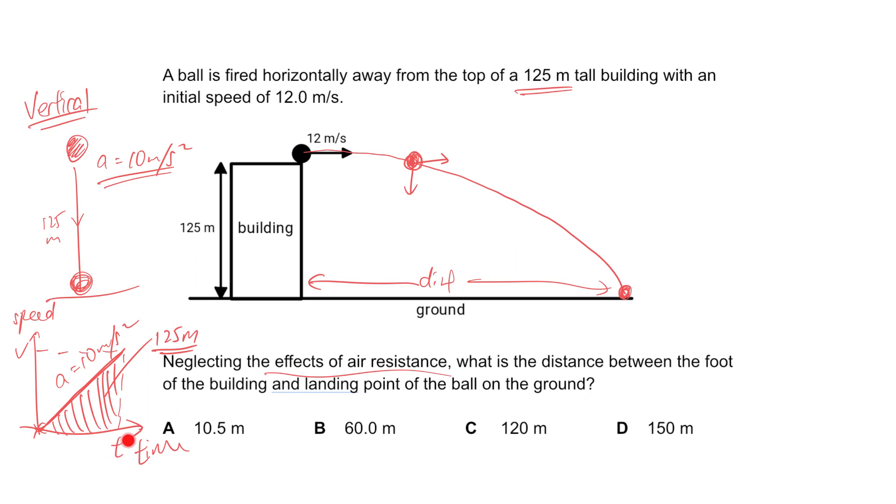Now we have two unknowns: t, the time it takes to reach the ground, and the final speed just before reaching the ground. To solve them, you can use two equations.